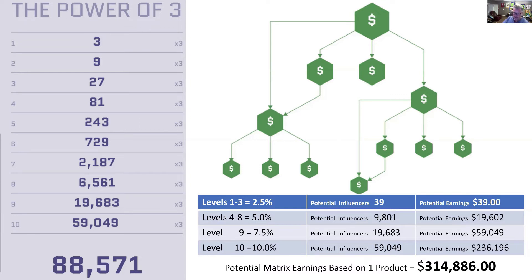That's the entire business model of Against All Odds. We don't care how difficult it is — that's why we came up with this name, Against All Odds. We'll take the hardest person, and if they're teachable and have a work ethic, we'll get them to where they want to be. That's the entire premise of our company.